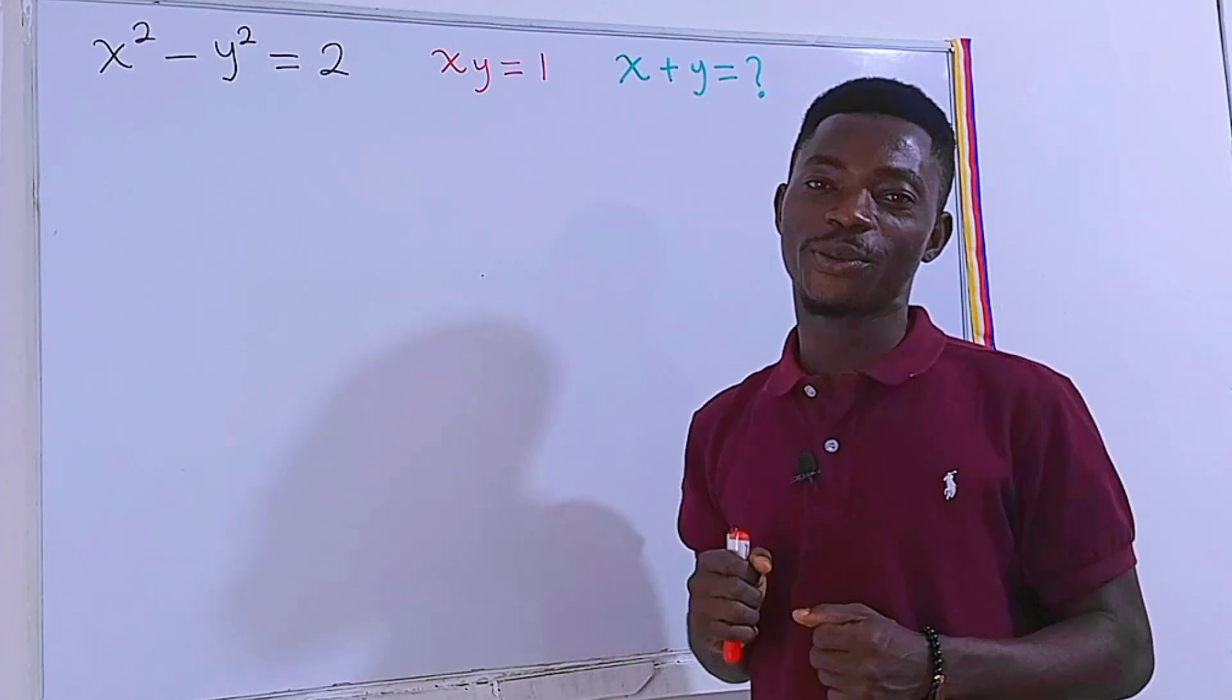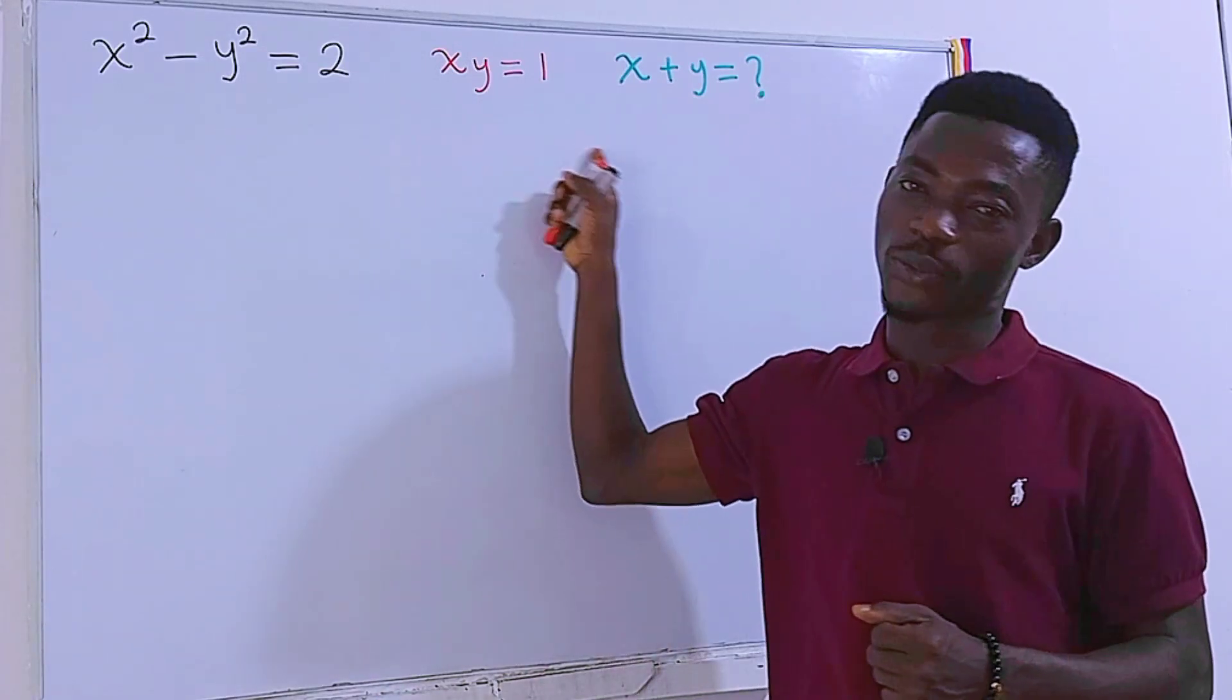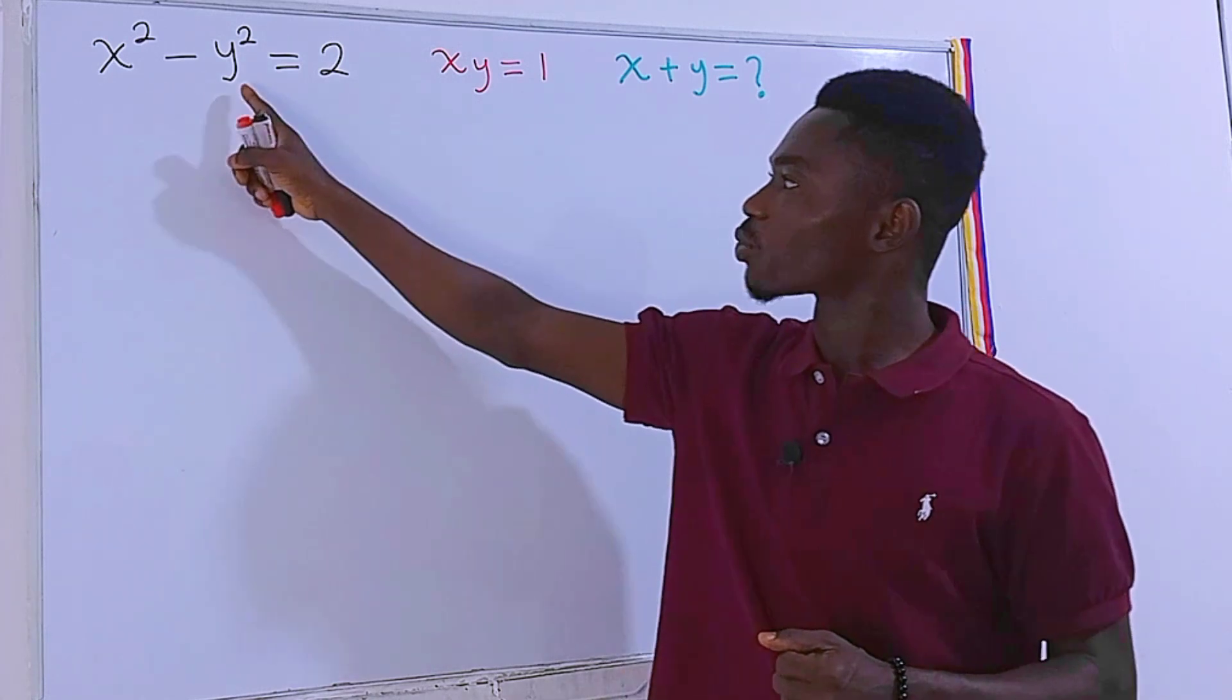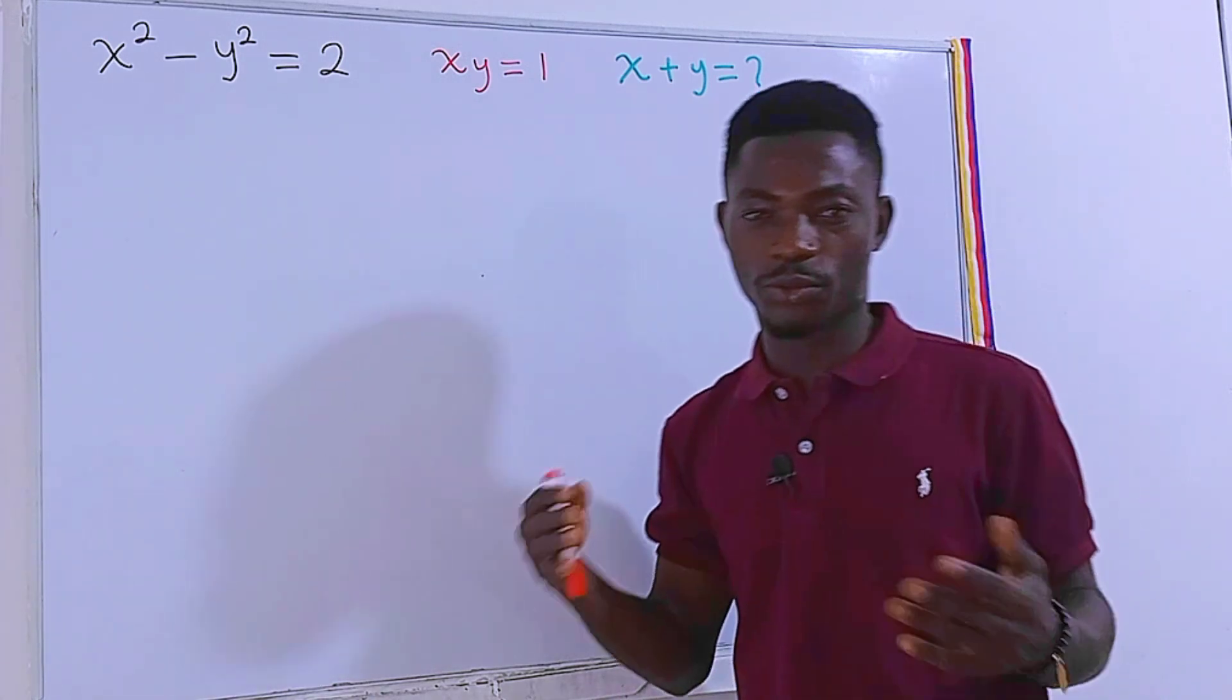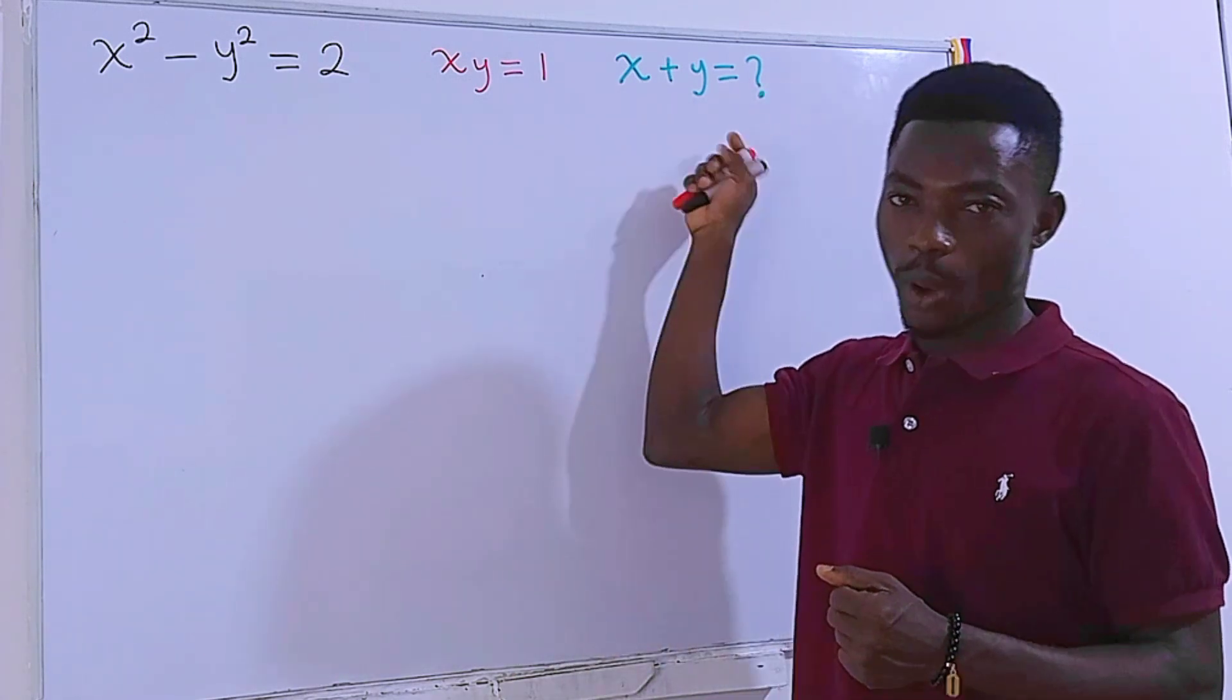Hello guys and welcome to another video. We have this interesting question right here. x squared minus y squared is equal to 2, xy is equal to 1, and we have to figure out the value of x plus y.